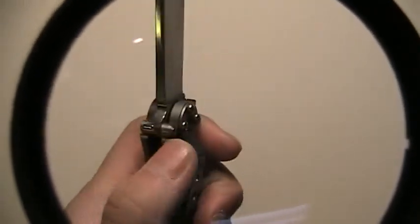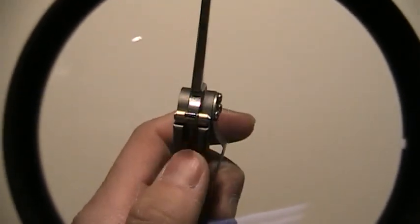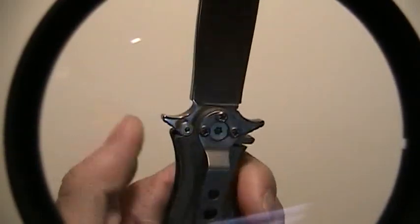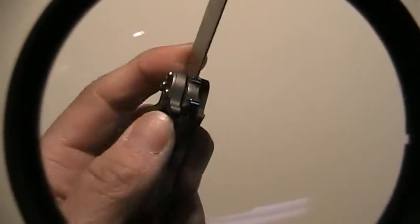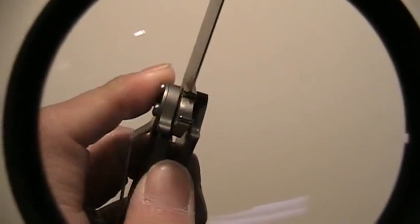So there are two thumb studs here, but it's more for the blade stop. It's not really meant for flicking out. There's really no way. You can hear that here. The frame lock is very tight. Hear that?